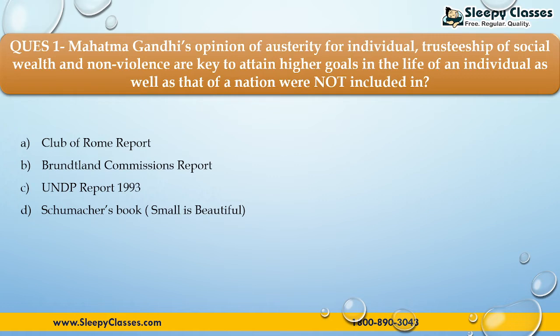the Brundtland Commission's report; Third, the UNDP report 1993; Fourth, 'Small is Beautiful.' So which report included Mahatma Gandhi's opinion? The correct answer is option C — that is the UNDP report of 1993.